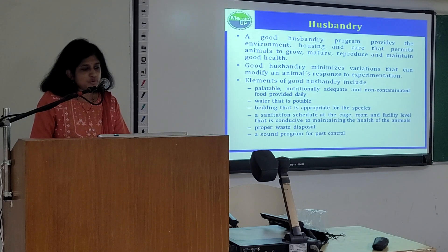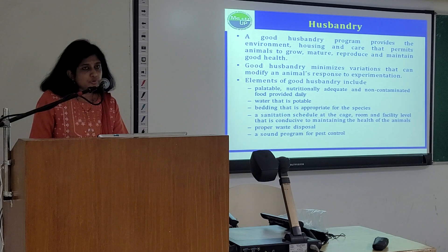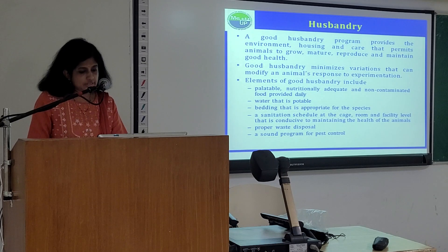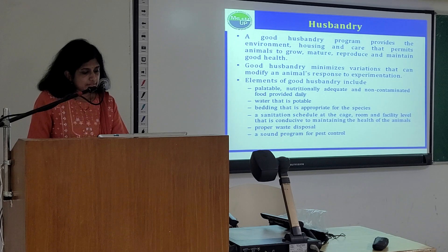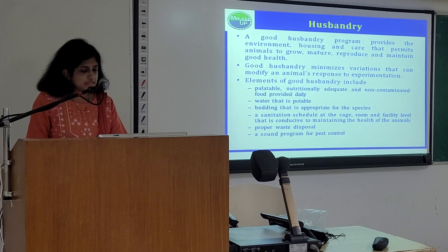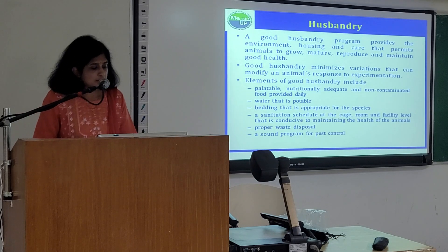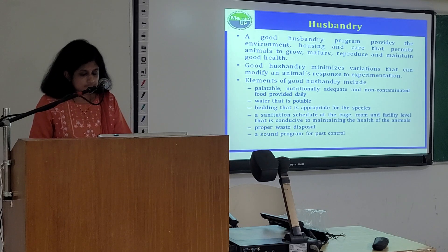These are used as bedding materials, which is part of good husbandry. A good husbandry program provides the environment, housing and care that permits animals to grow, mature, reproduce and maintain good health. Good husbandry minimizes variations that can modify an animal's response to experimentation. Elements of good husbandry include palatable, nutritionally adequate and non-contaminated food provided daily; potable water; appropriate bedding for the species; a sanitation schedule at the cage, room and facility level conducive to maintaining animal health; proper waste disposal; and a sound program for pest control. These elements will be discussed one by one.